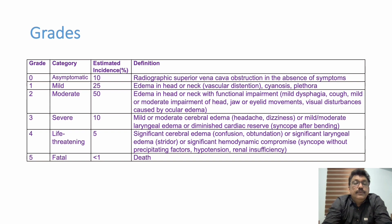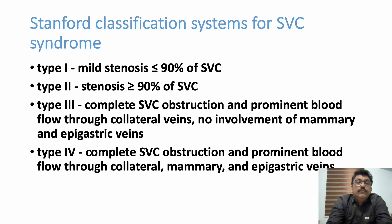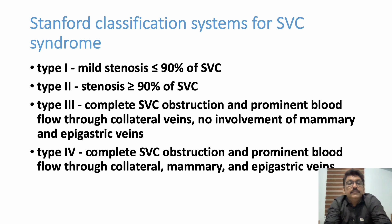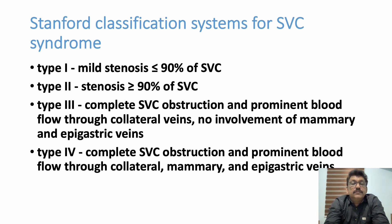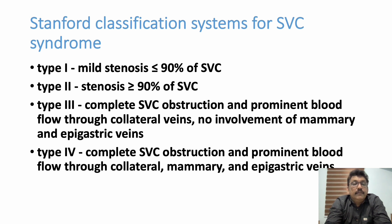There is also the Stanford classification for SVC syndrome. Type 1 is mild stenosis of less than 90% of the SVC, detectable by CT. Type 2 is stenosis of more than 90% of the SVC. Type 3 is complete SVC obstruction with prominent blood flow through collaterals but no involvement of the mammary or epigastric veins. Type 4 is complete SVC obstruction with prominent blood flow through collaterals including the mammary and epigastric veins, giving collaterals across both chest and abdomen.